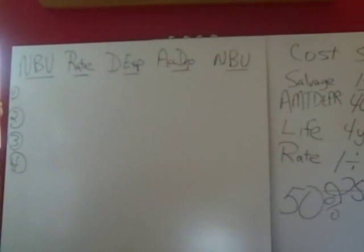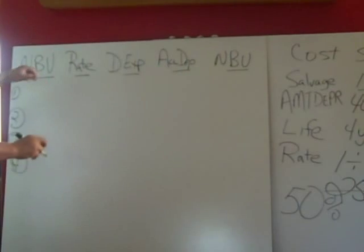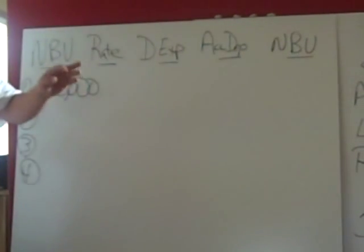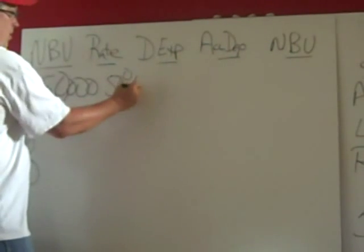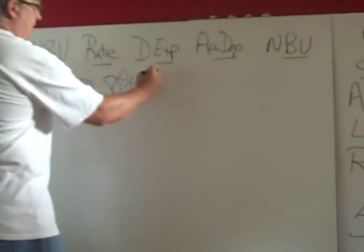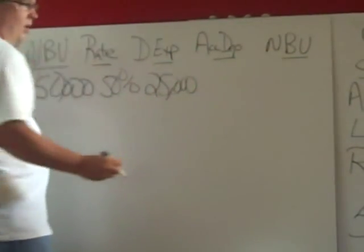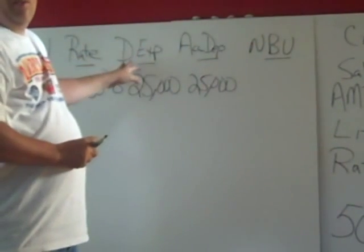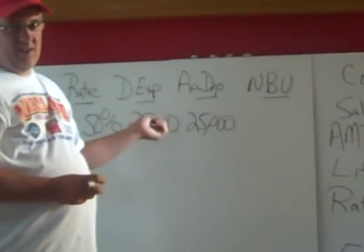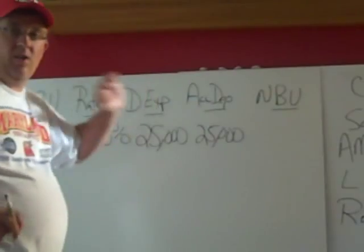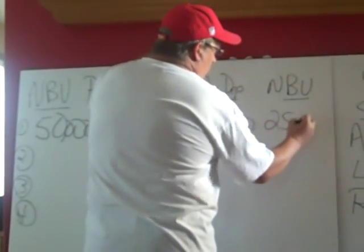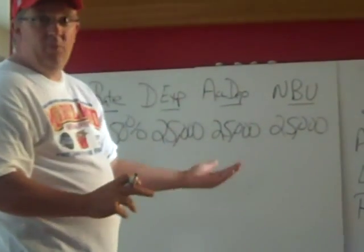I have a little chart set up. We're going to start off with our beginning net book value, which is going to be our original cost of $50,000. Our rate is going to be 50%, so our first year depreciation expense is going to be $25,000. Our accumulated depreciation in the first year is also $25,000. Remember, depreciation expense is an expense on the income statement; accumulated depreciation is a contra asset on the balance sheet, lumped together with the original cost at net book value. Our ending net book value is $25,000.